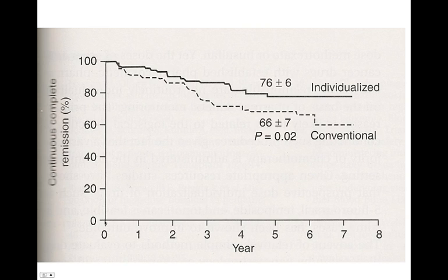Here is a continuous complete remission percentage graph. We'd like to stay at 100% as we move out to eight years post-diagnosis. If we individualize methotrexate therapy, we have a much better outcome than conventional protocol-driven dosing. If this were me or someone I loved, I'd want to have the individualized therapy.